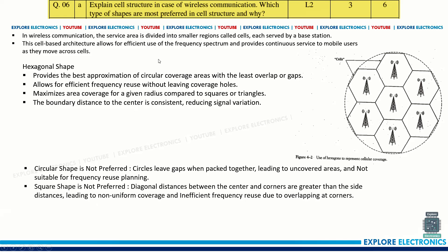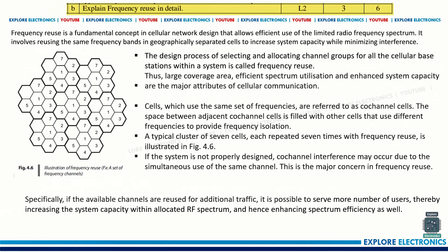Please elaborate these answers in your exams. The next question is: explain frequency reuse in detail. Frequency reuse is the concept of reusing the same frequency in different cells. You need to draw the frequency reuse diagram showing the set of cells, where adjacent cells use the same set of frequencies. The numbering 1 through 7 is used, and the same numbered cells — for example cell 1 — are not adjacent to each other.